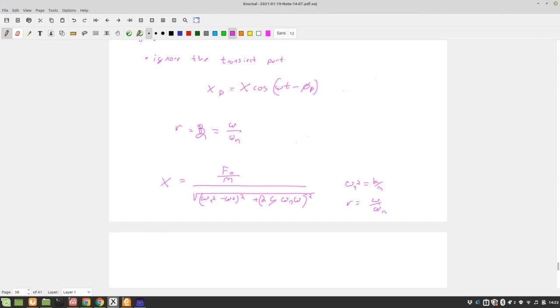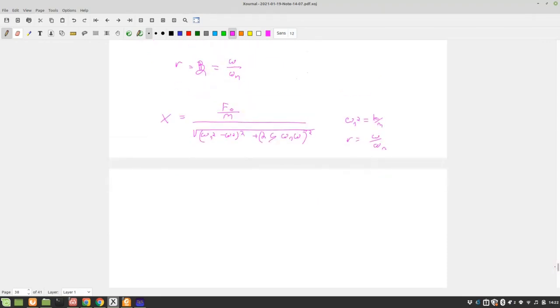If we factor out ω_n from the denominator and substituting in ω_n = sqrt(k/m), so we have ω_n here in the denominator, so let's factor that out. And add in that ω_n² = k/m, and that r = ω/ω_n, we get a term that looks more like this.